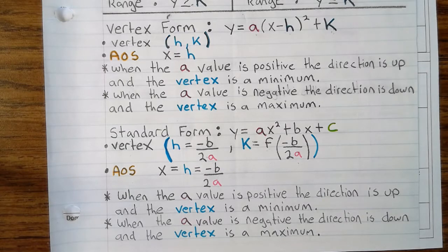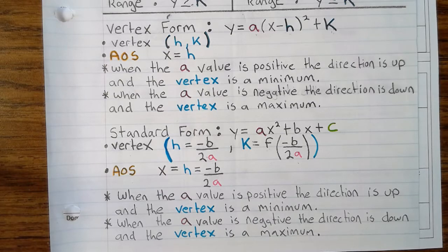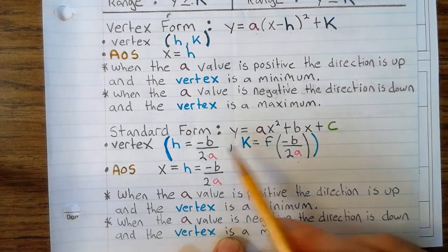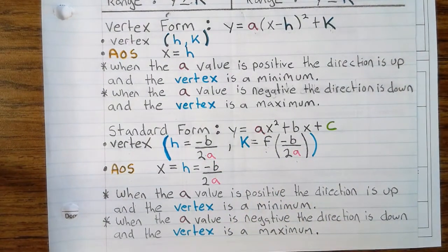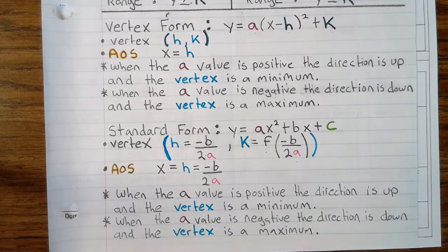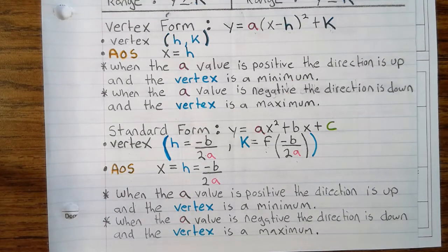In standard form, y = ax² + bx + c, where the vertex is h = -b/(2a), and k = f(-b/(2a)). I'm going to explain how we can use the h value to find the k value. The axis of symmetry is x = h = -b/(2a). When the a value is positive, the direction is up and the vertex is a minimum. When the a value is negative, the direction is down and the vertex is a maximum.